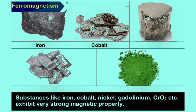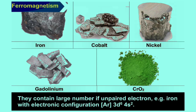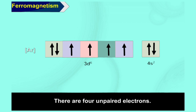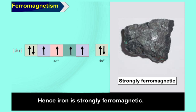Ferromagnetism. Substances like iron, cobalt, nickel, gadolinium, and CrO2 exhibit very strong magnetic properties. These substances can be permanently magnetized. They contain a large number of unpaired electrons. For example, iron with electronic configuration [Ar] 3d6 4s2 has four unpaired electrons. Hence, iron is strongly ferromagnetic.